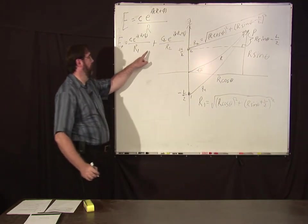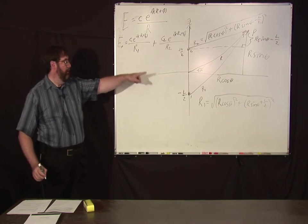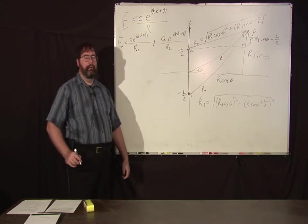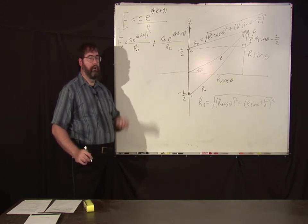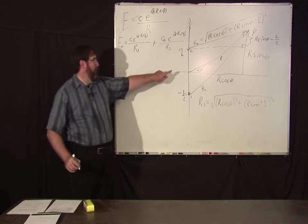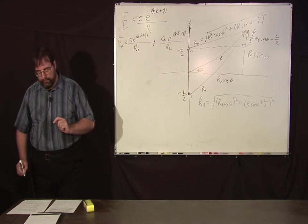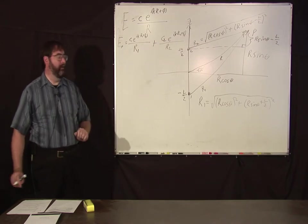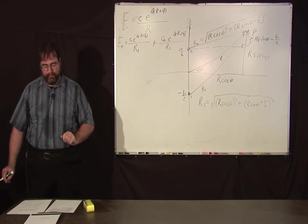Okay, now we have an expression for the field at an arbitrary point for two isotropic radiators. What we're going to do now is implement these equations in Excel and show you what happens. That's what we'll do next.